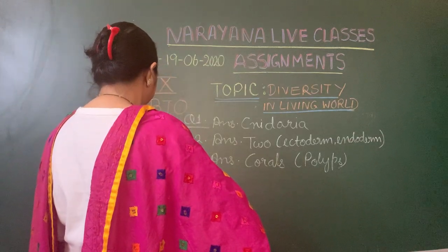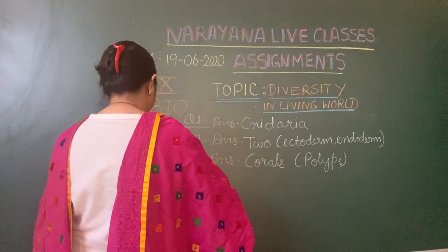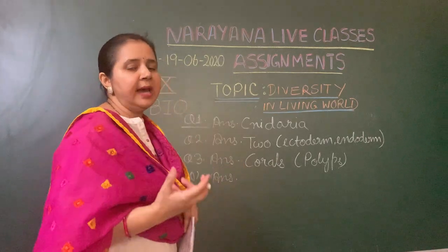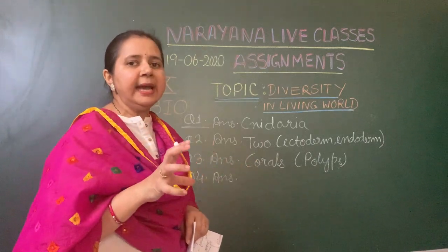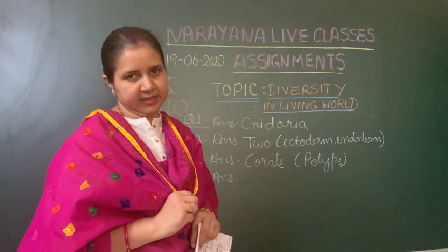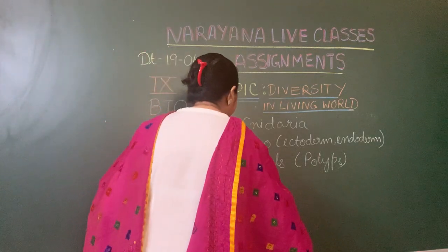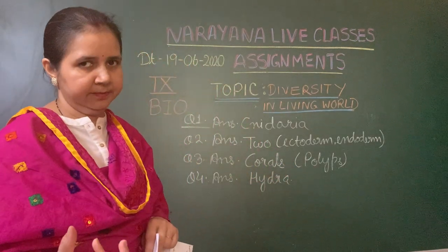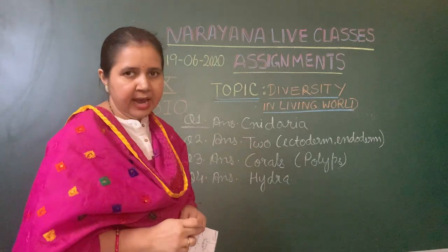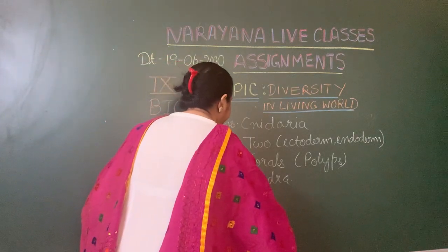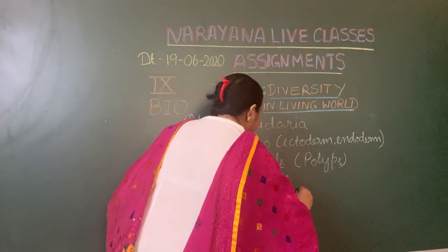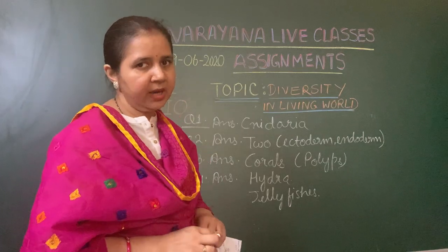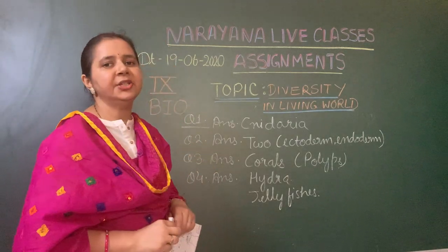Question number four asks: name two examples of Cnidaria which show solitary habitat — meaning they are basically present at one place. The first example is hydra, which is attached to stones or twigs and does not move around. The second example is jellyfish; some jellyfishes are attached to the seabed. So the answer is hydra and jellyfish.